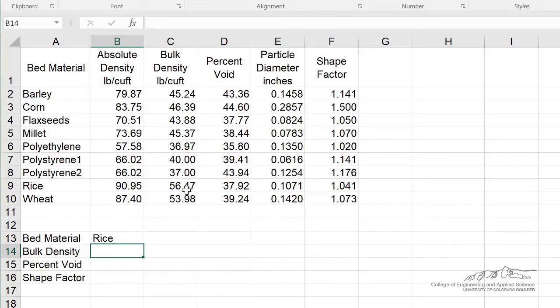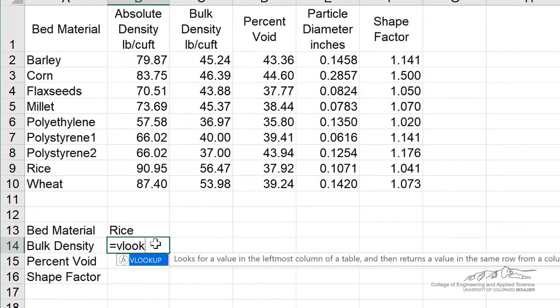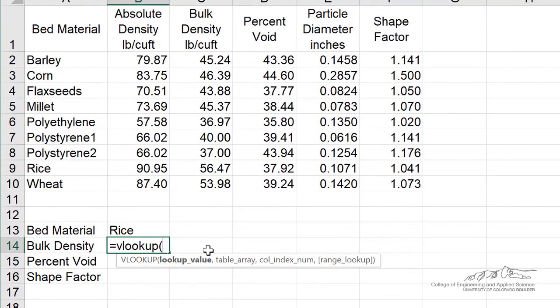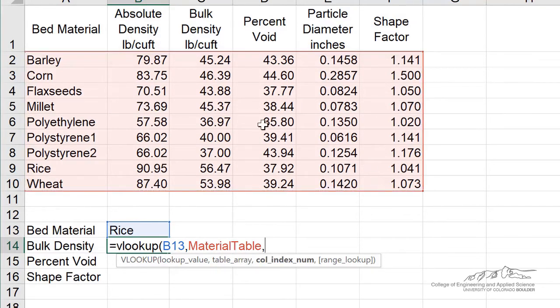To do this, we're going to use the VLOOKUP function. It searches through the leftmost column and then outputs a row that it finds the item in. Let's go ahead and do an example here. I'm going to use rice as my material, and again, what I'm looking for is in the leftmost column of an array. I've already named this array material table up here. I'm going to type in VLOOKUP, and now we need the lookup values. Then the table array that we're looking through is that material table, so I'm just going to highlight that, or you could type in material table.